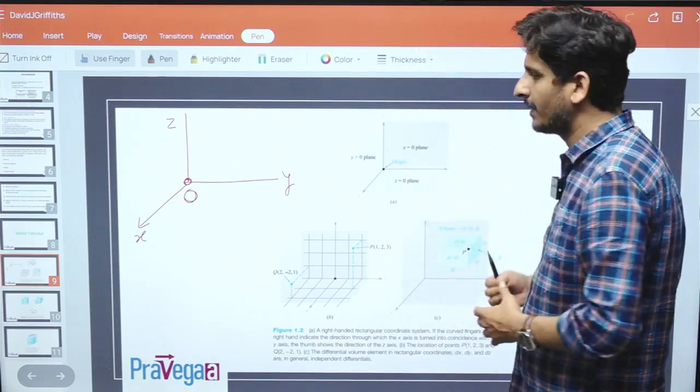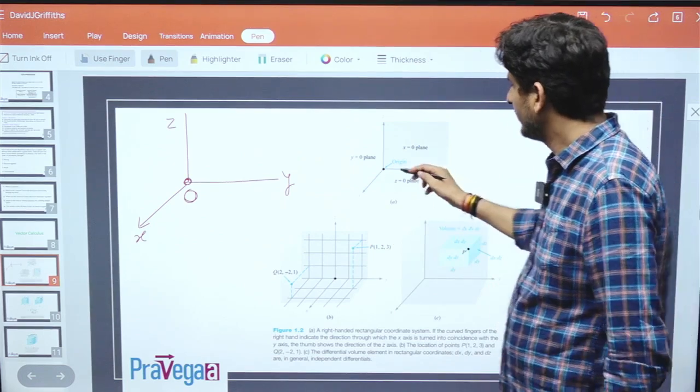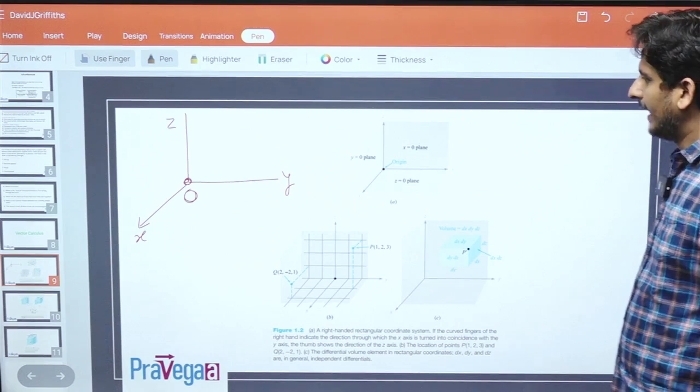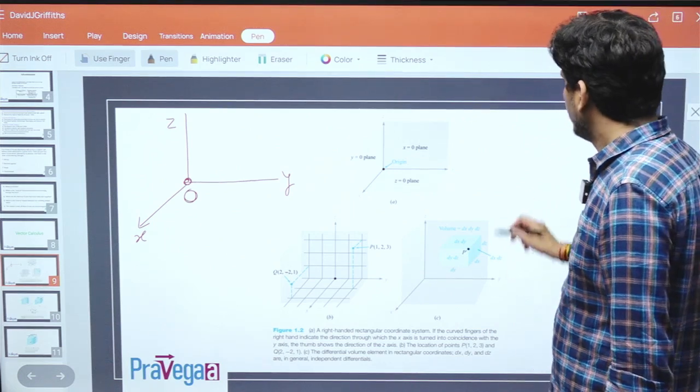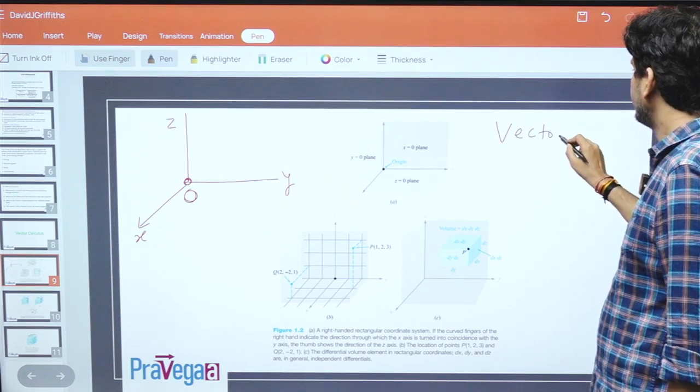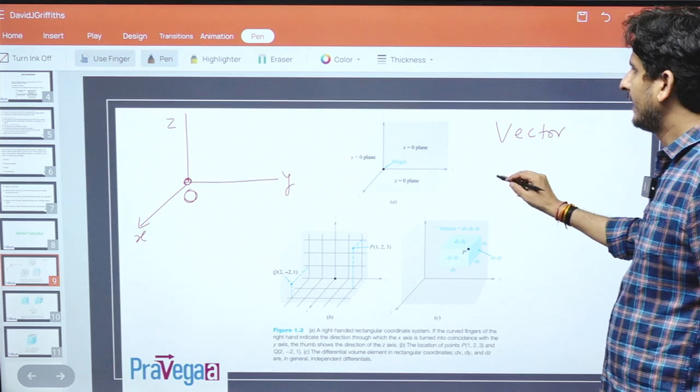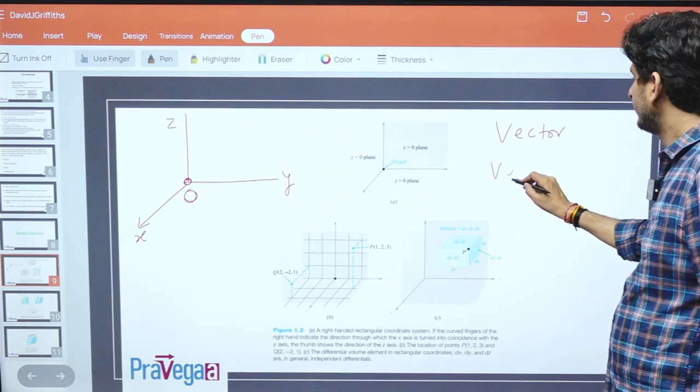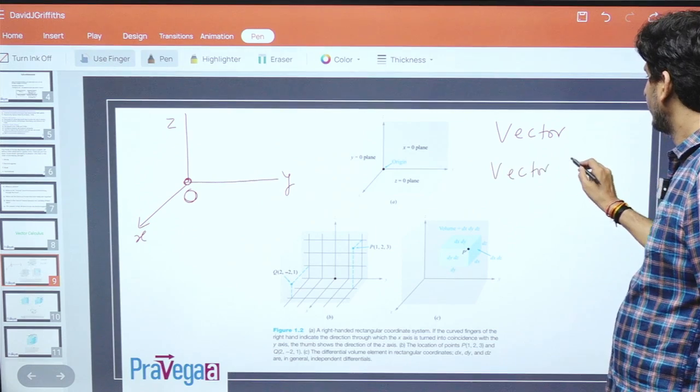The planes x equals 0, y equals 0, and z equals 0 combine at a point that is called the origin. There are two words: one is vector and another is vector field.